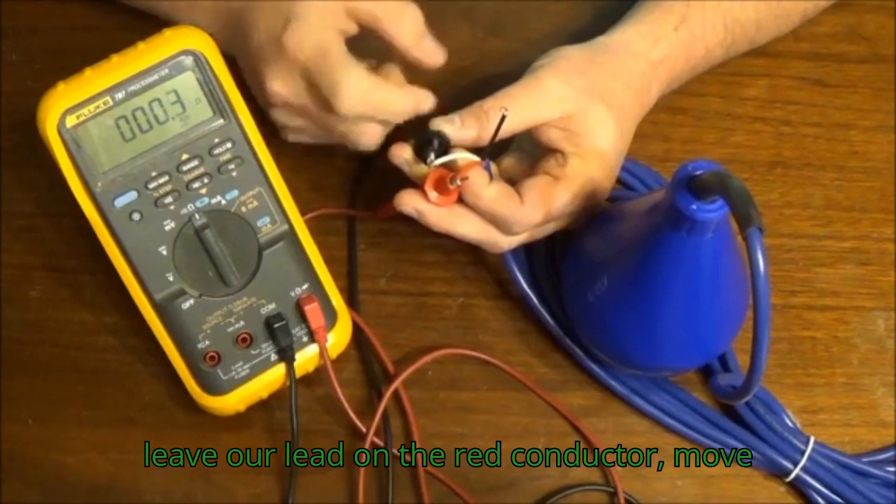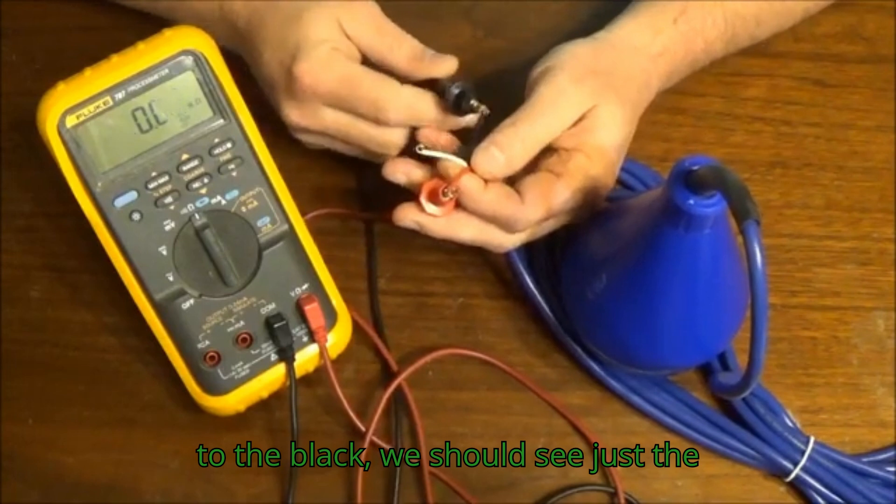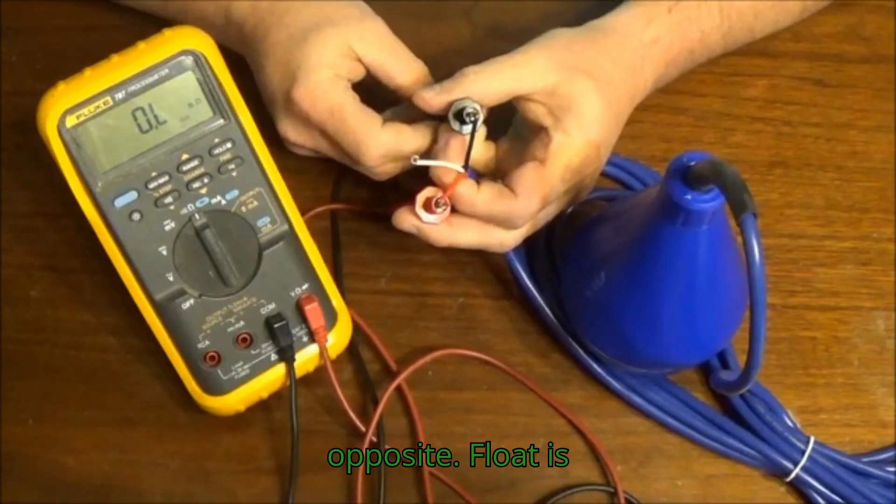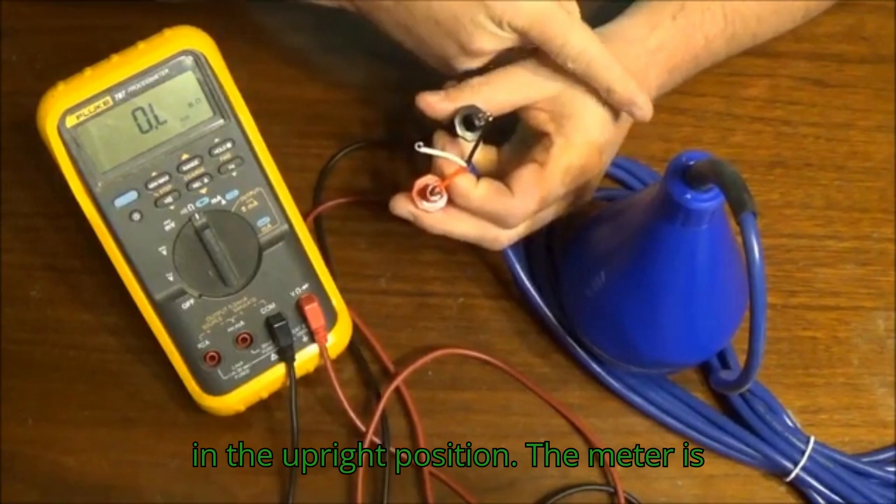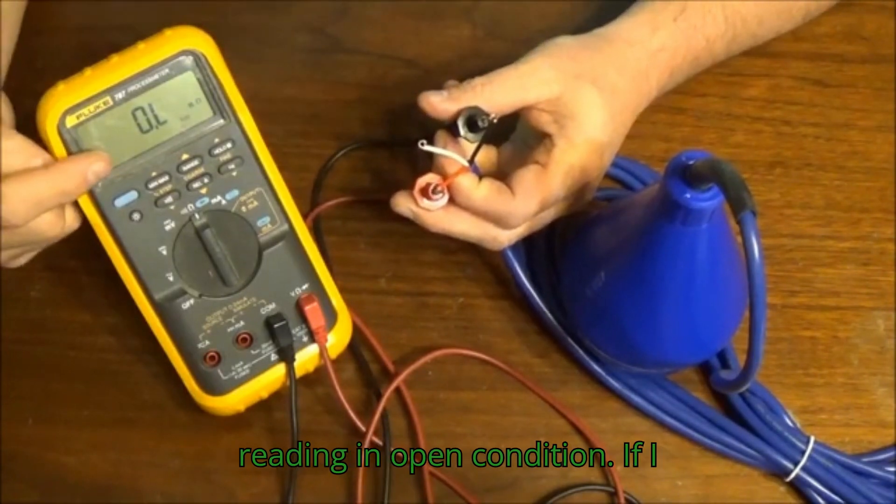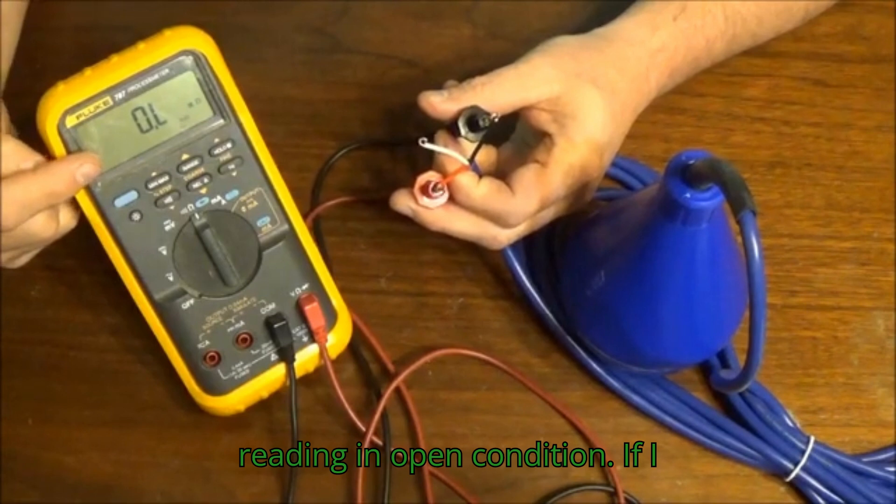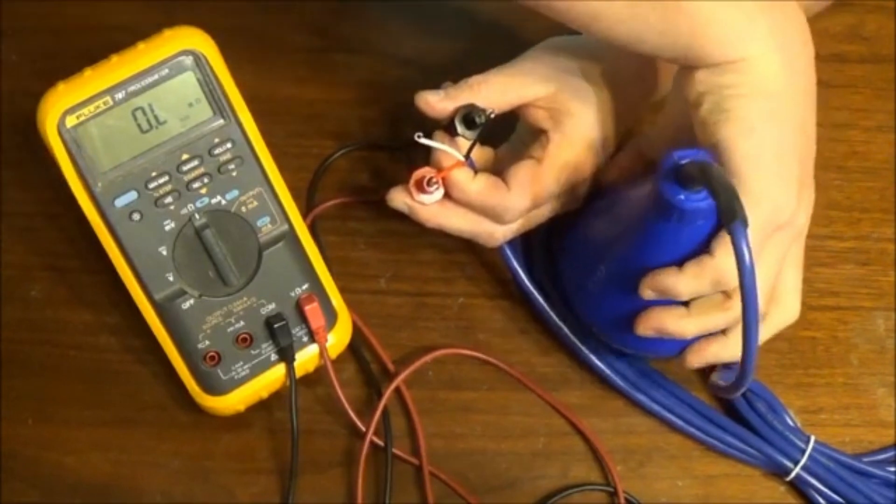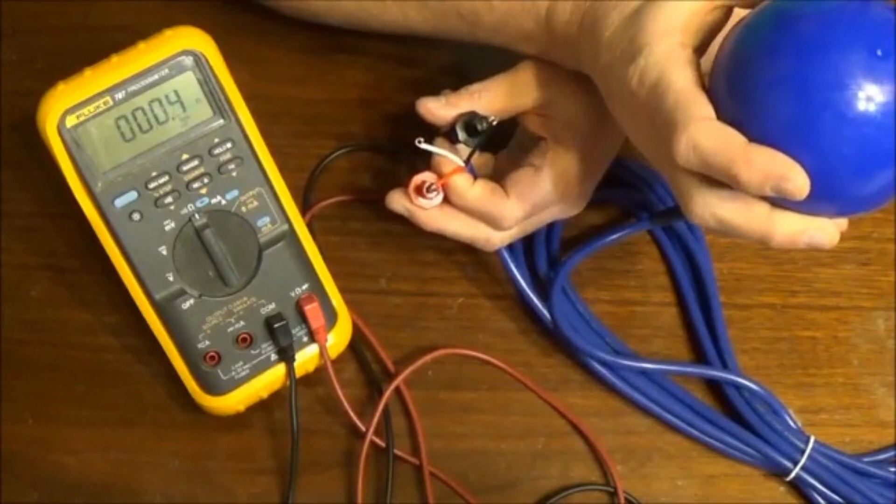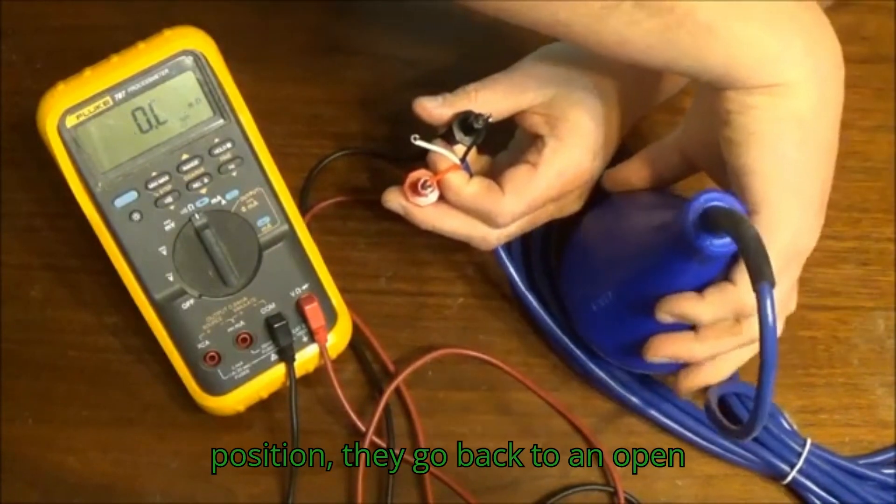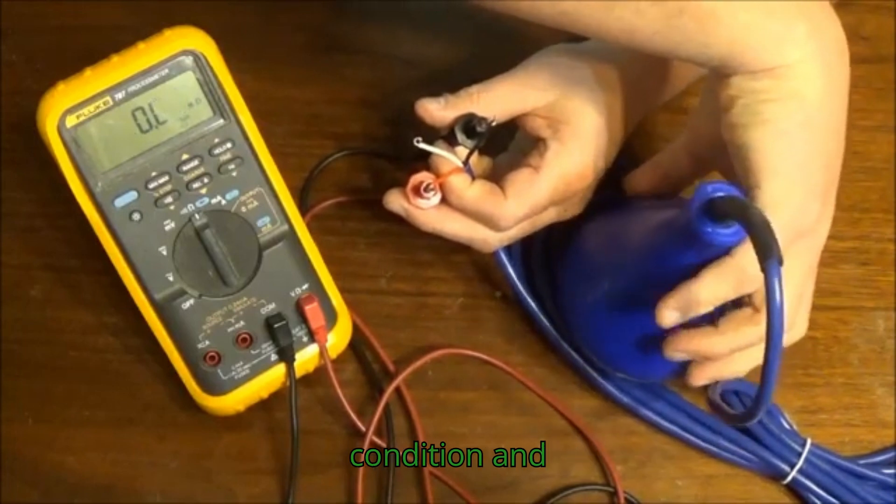Now if we leave our lead on the red conductor, move to the black, we should see just the opposite. The float is in the upright position, the meter is reading an open condition. If I toggle the float, we should see a shorted condition. Put the float back to its normal position, and go back to an open condition.